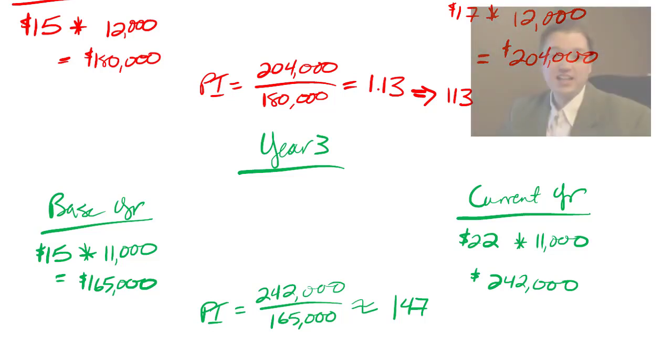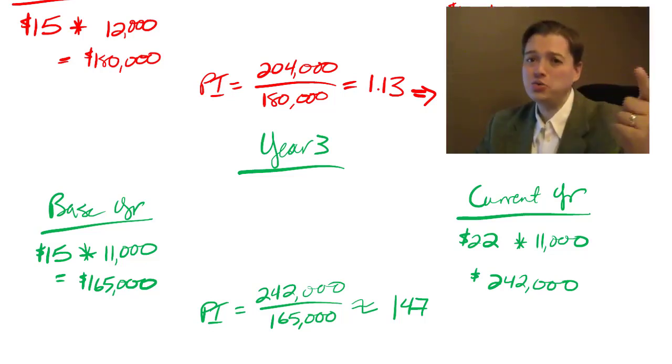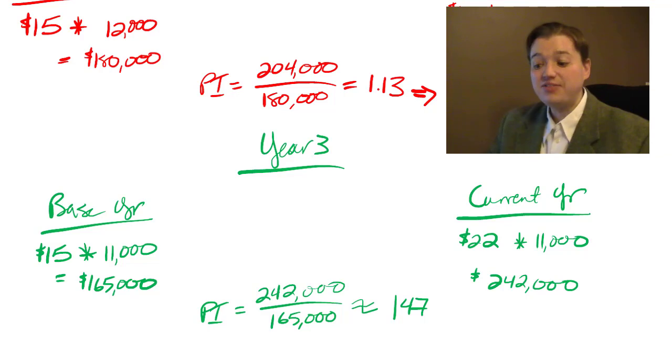Now when I teach this in class, I always have somebody say, 'You know, you could just divide the $22 by the $15 and you get that same 147.' And the answer is, you're right—as long as you only have one product, it works just fine. When you have multiple products, you can't use that shortcut anymore. So if it's just a one-product system, go for it, use the shortcut. But let me show you how it's different when you use multiple products.